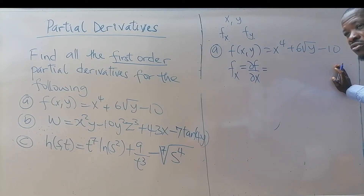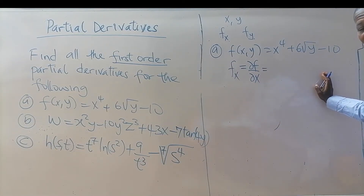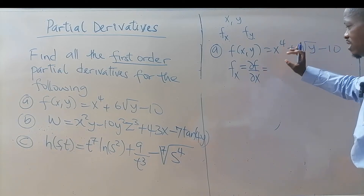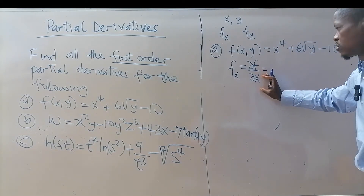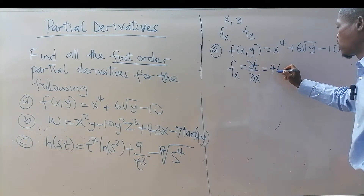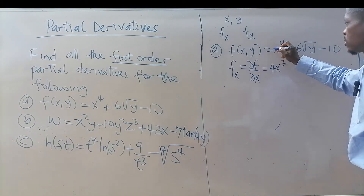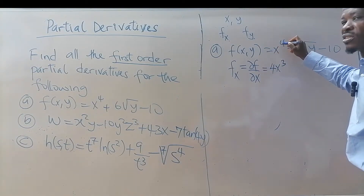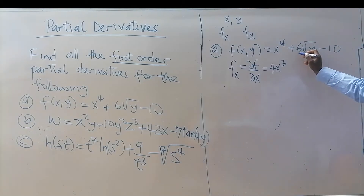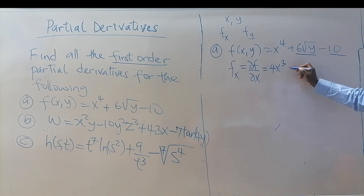When doing a partial derivative with respect to x, all other variables are kept as constants — you only differentiate the x terms. So this gives us 4x³ — the 4 comes to the front and the power decreases by one. The 6√y term is a constant and the -10 is also a constant, so they both go to zero. That's our answer for f subscript x.